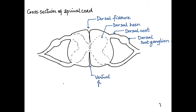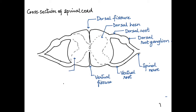On the ventral side we have the ventral fissure. The ventral fissure is deeper than the dorsal fissure. Just as there is a dorsal horn, there is also a ventral horn. The ventral root is the part where the nerves leave the spinal cord, and it joins with the dorsal root to form the spinal nerve.